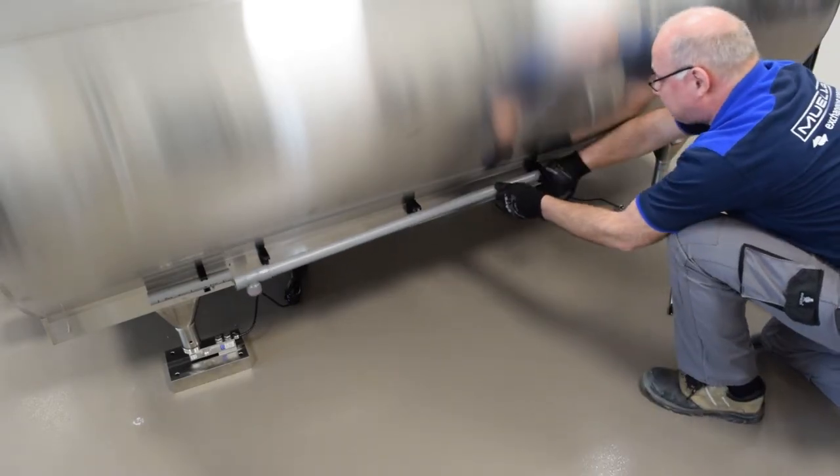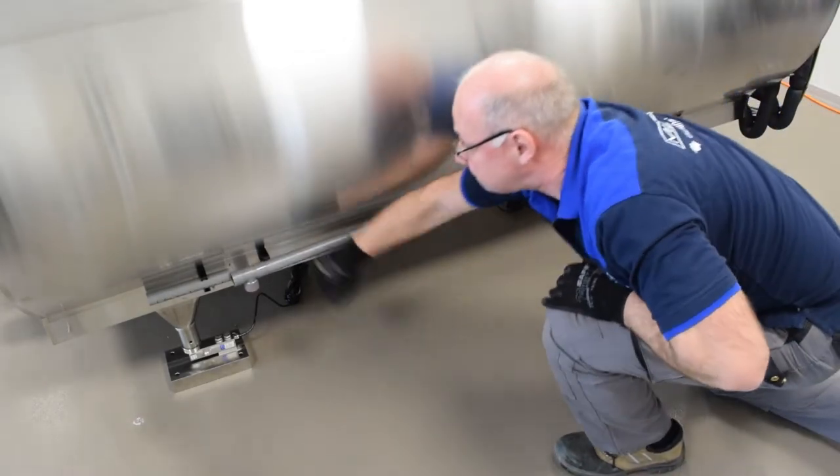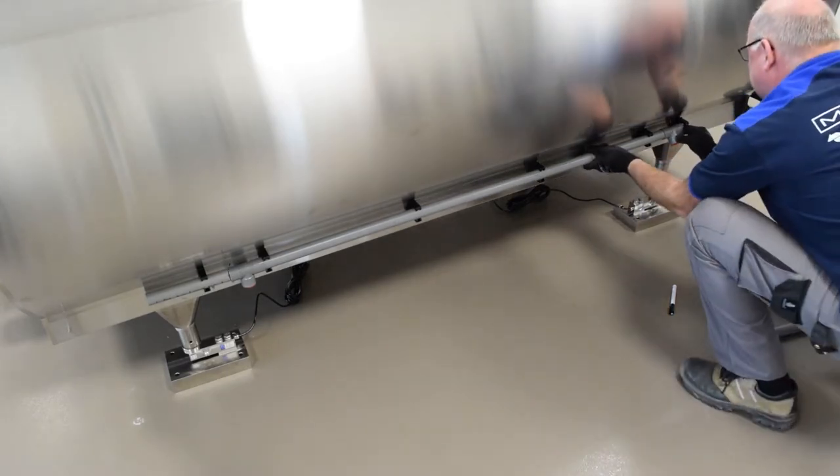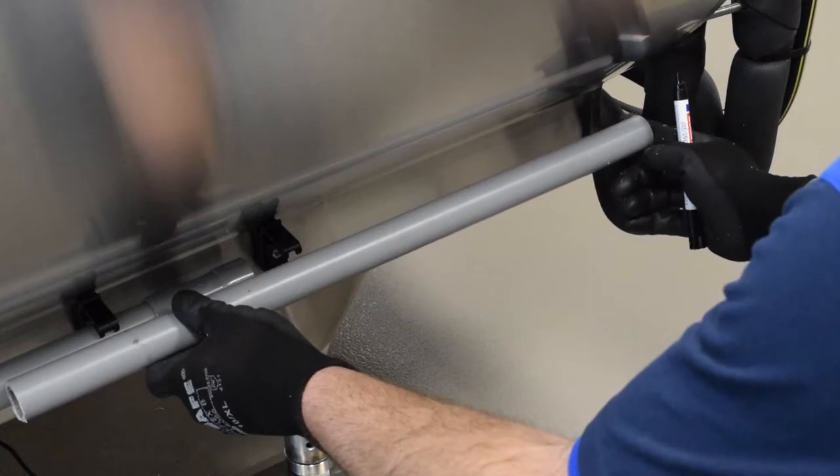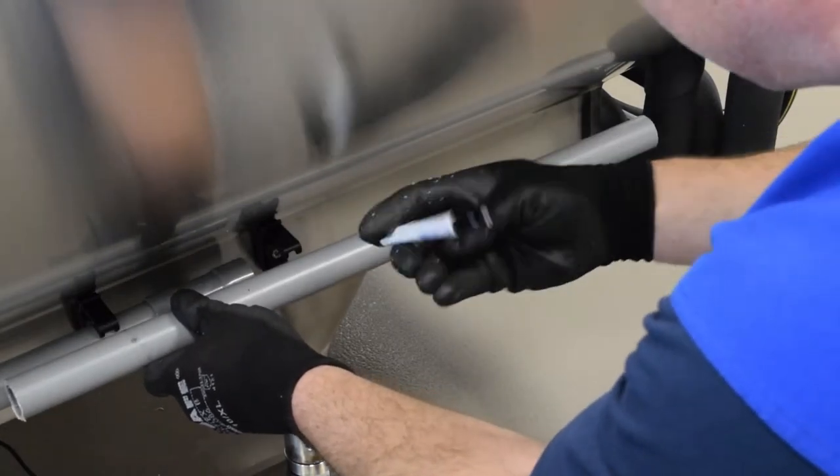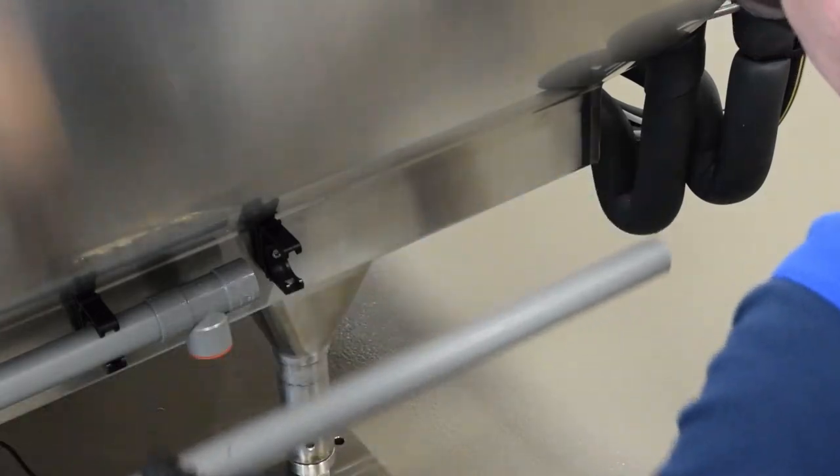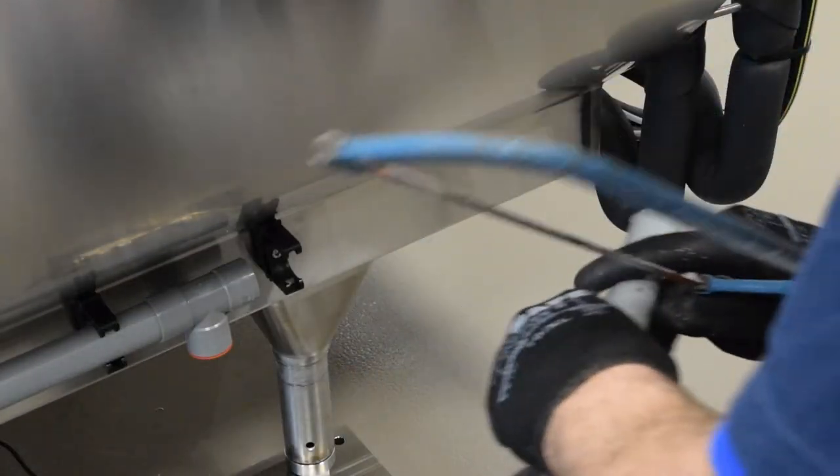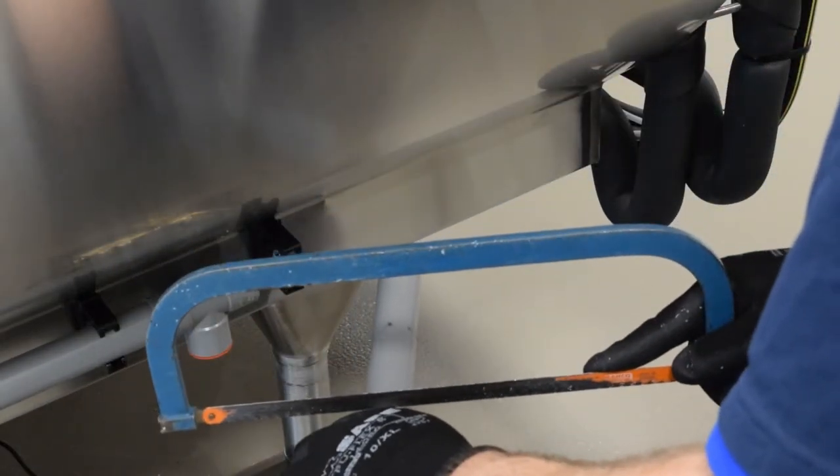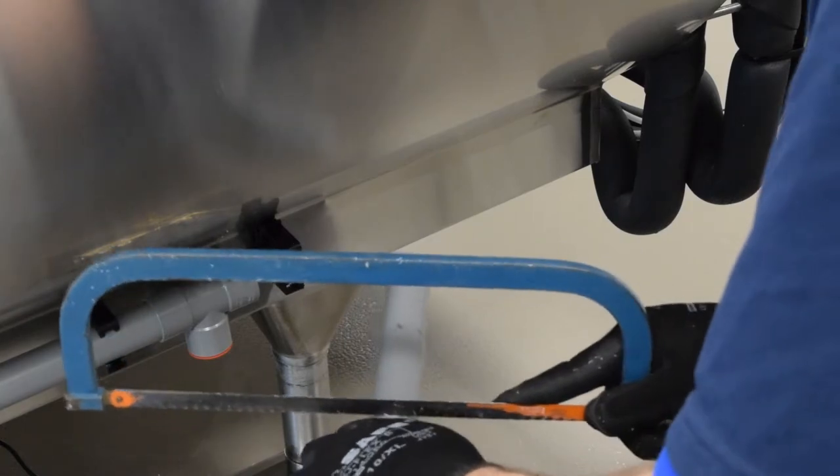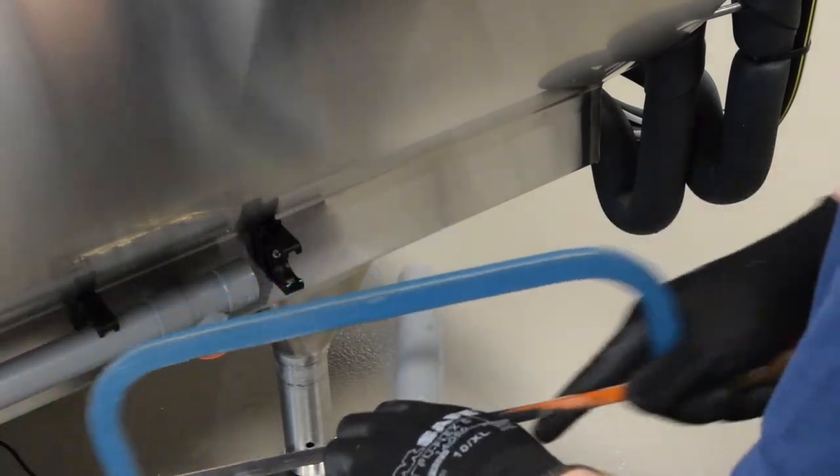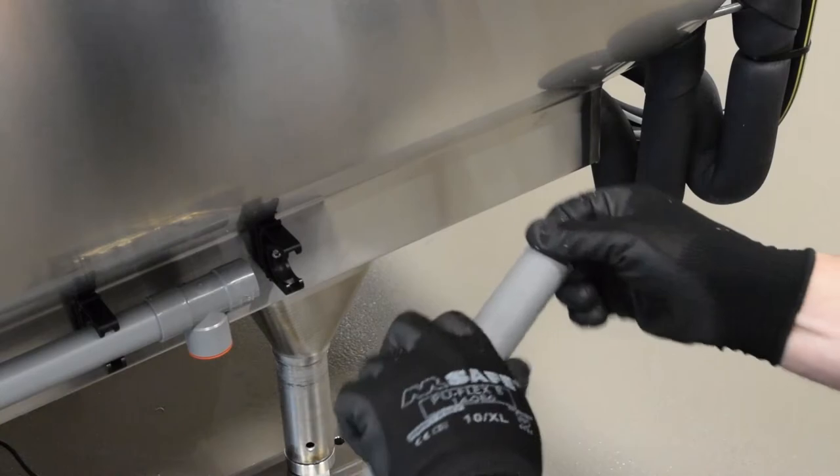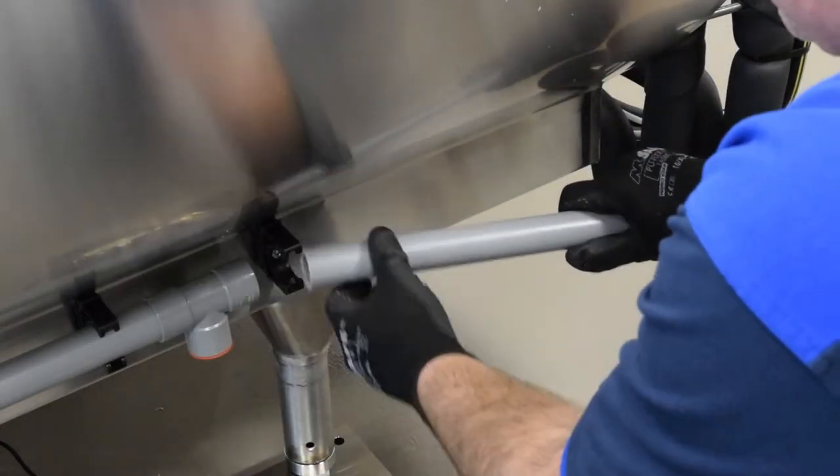Now place the T piece on the tube. In the video we have a tank with only two legs on each side. Repeat these steps if there are more legs. Measure the tube length from the back of the tank to the last T piece and saw it. Get rid of the saw residue and mount it.